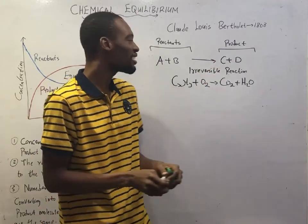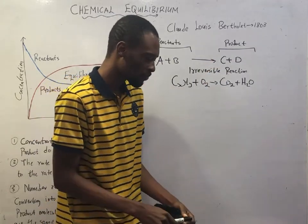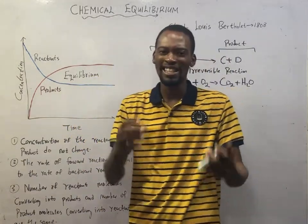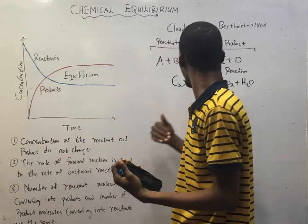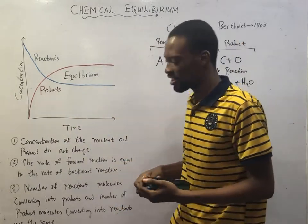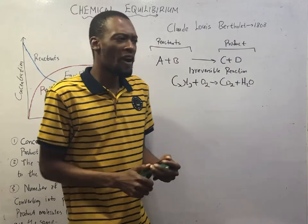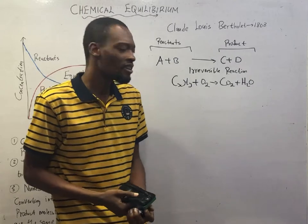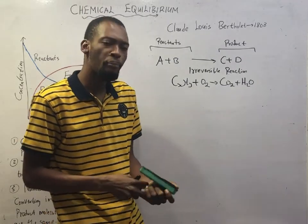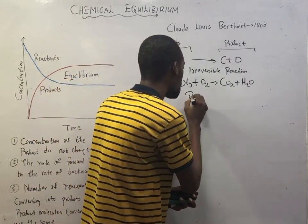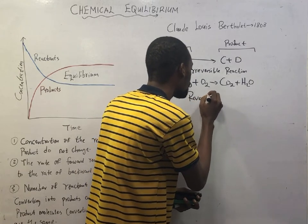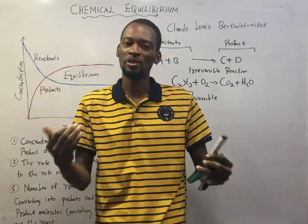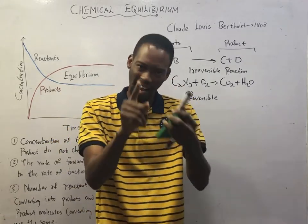It was believed that all reactions are irreversible until 1808, when a French chemist Claude-Louis Berthollet discovered or proposed the concept of reversible reactions. He was able to let us know that some reactions are reversible.